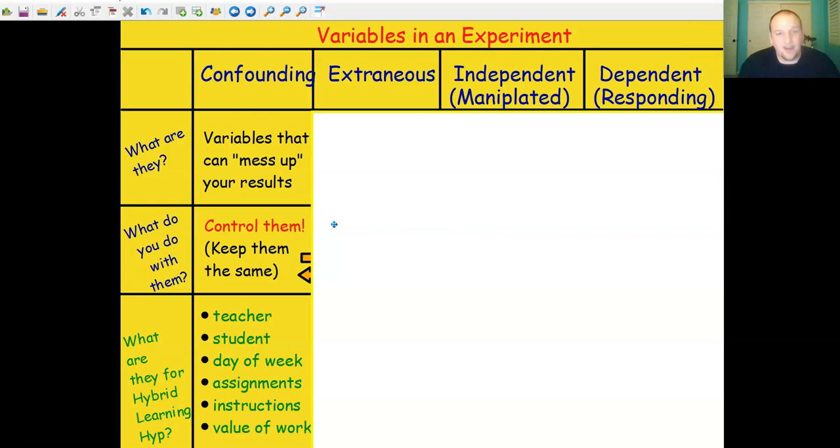If I let those things change, they could be affecting my results. So we call them confounding or controlled variables. They're ones that can confound our results if we don't control them. And if we control them, we have a good experiment.